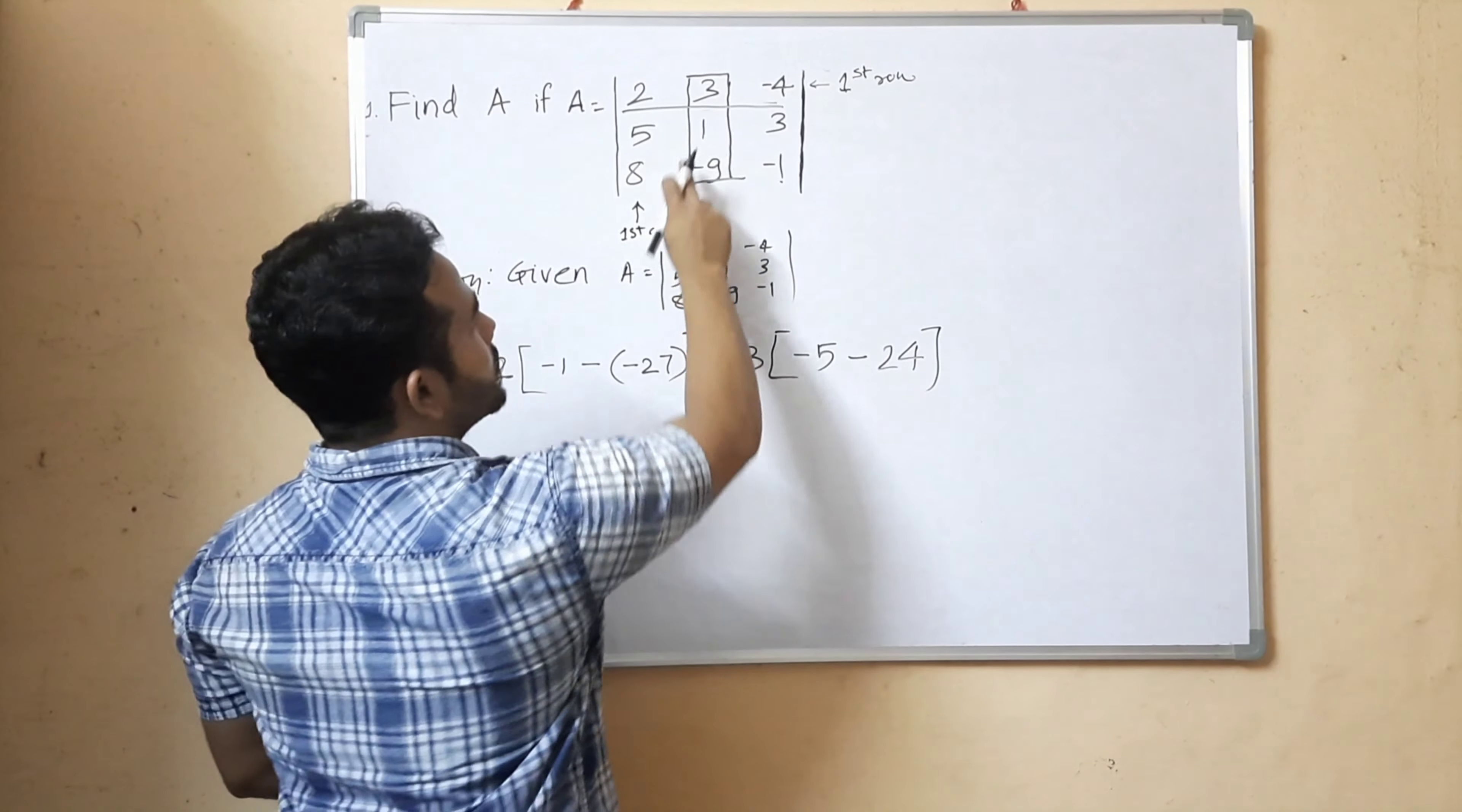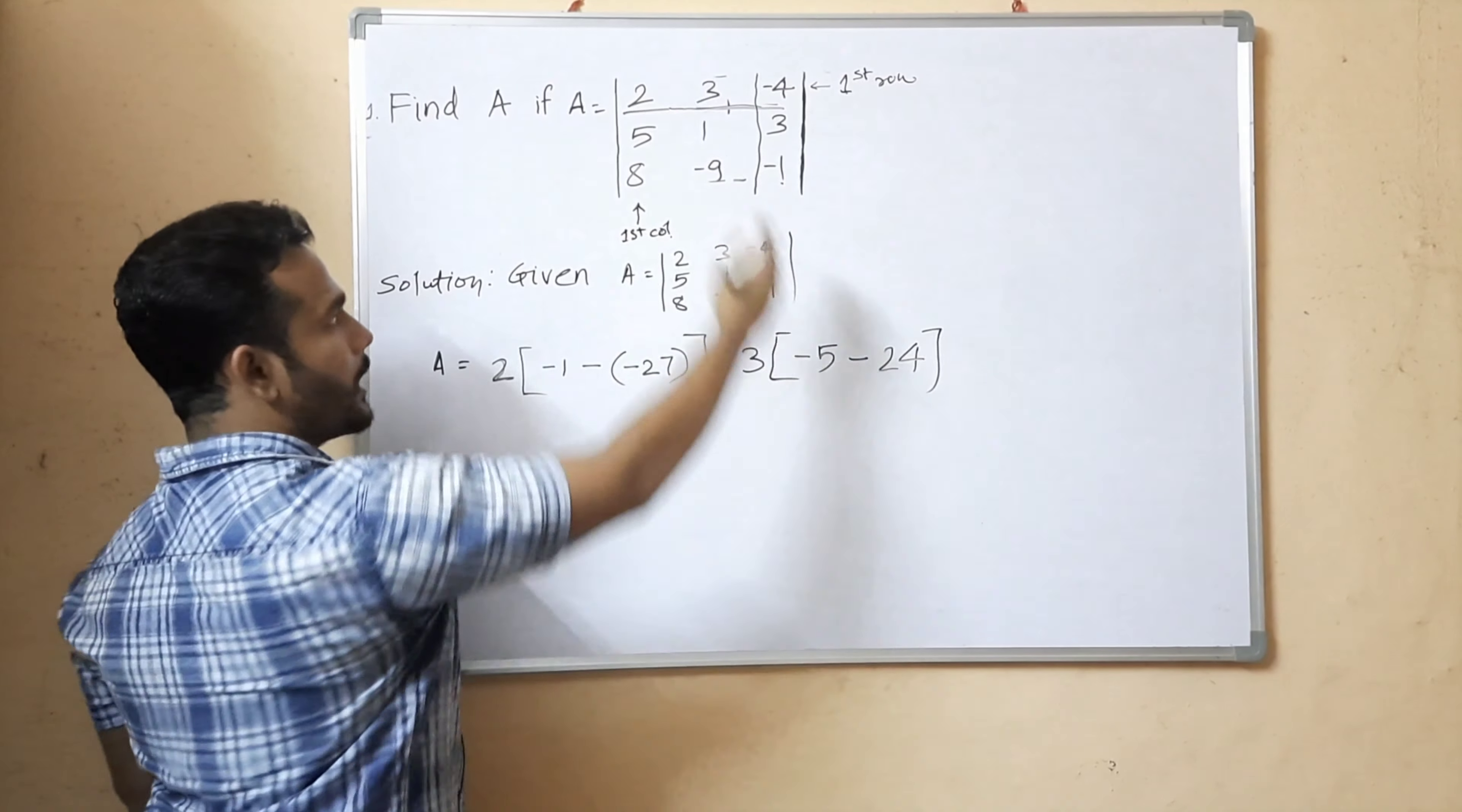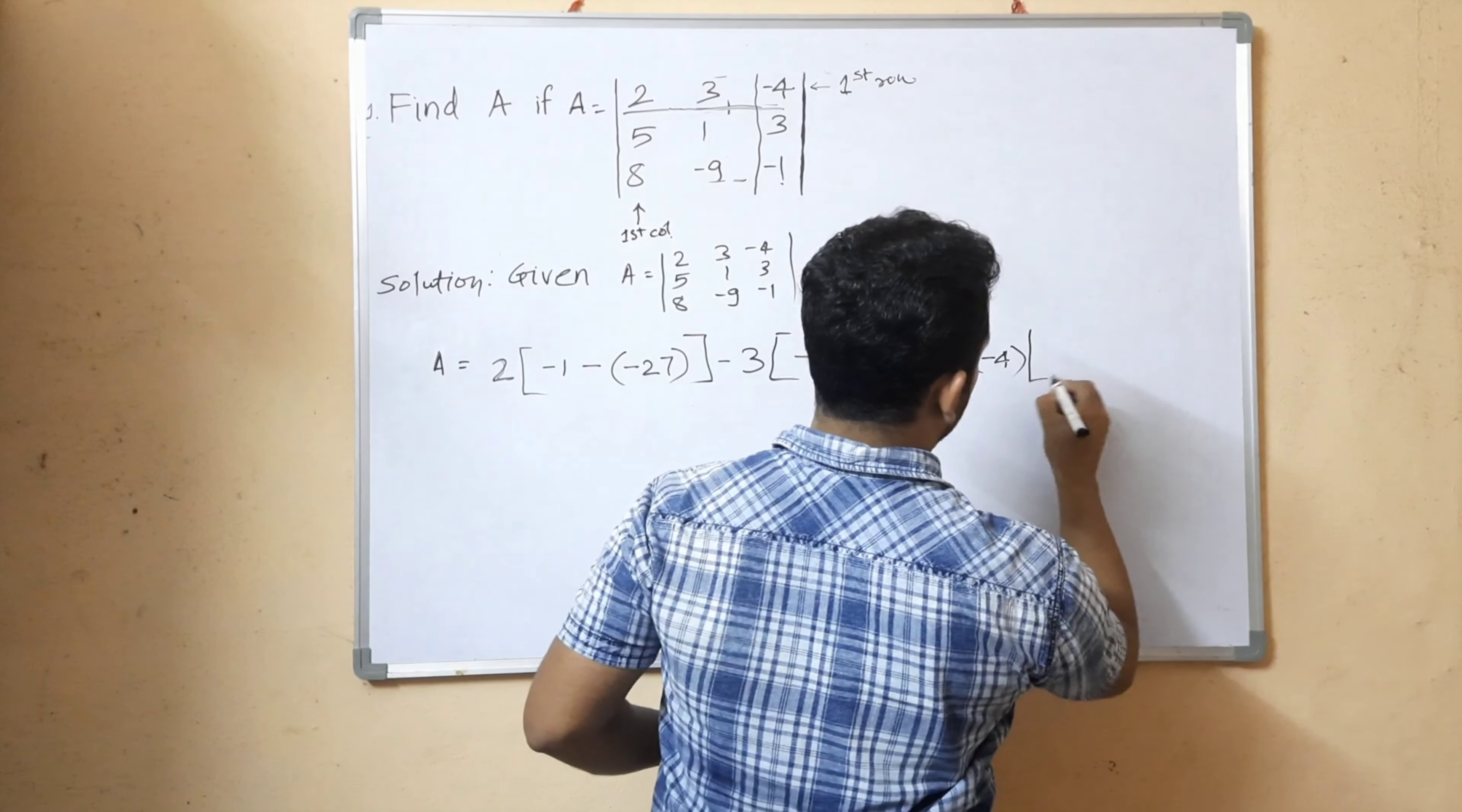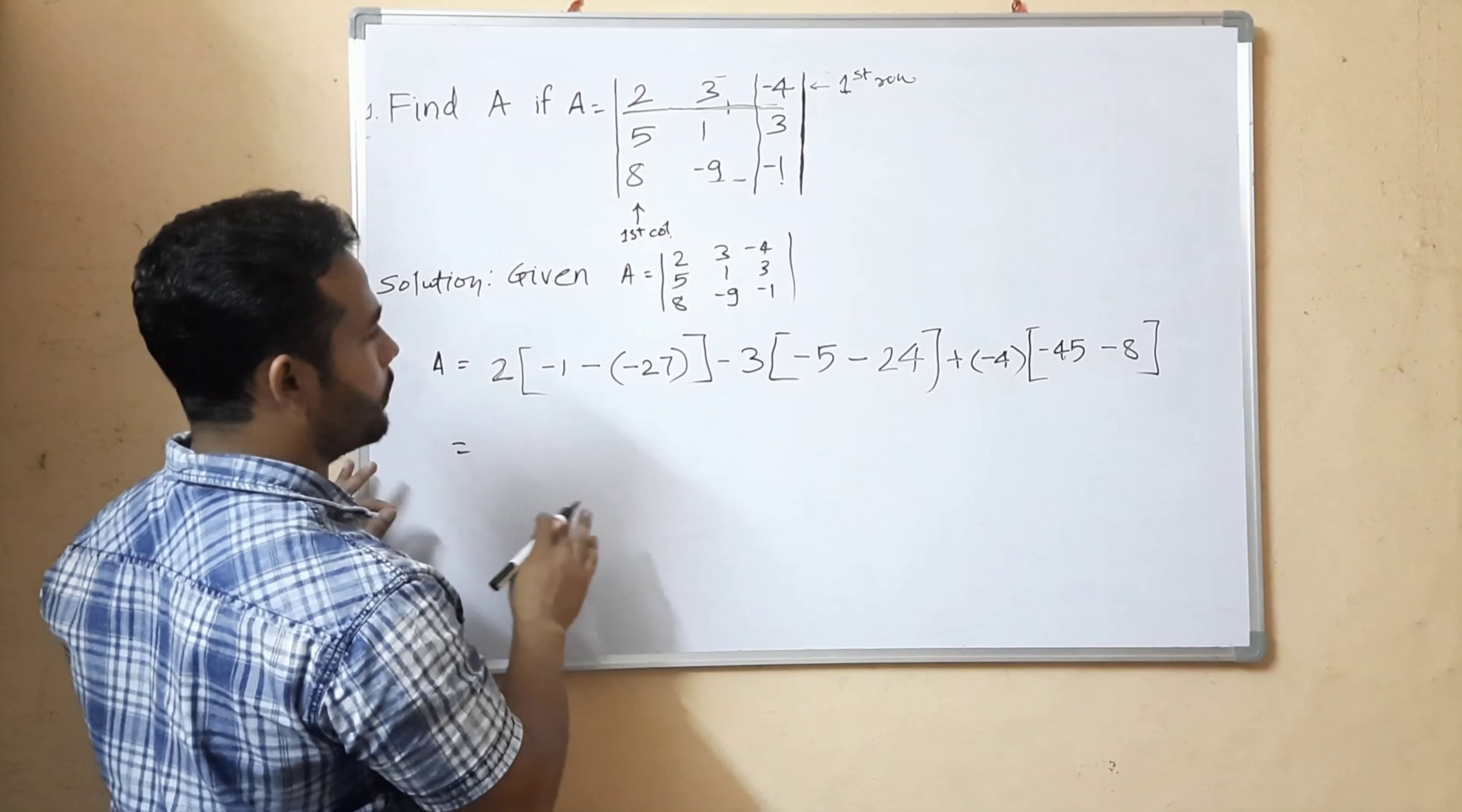The third element is minus 4. So minus 4 times the determinant gives us minus 4 times [5 times minus 9 minus 8 times 1], which is minus 4 times [minus 45 minus 8].